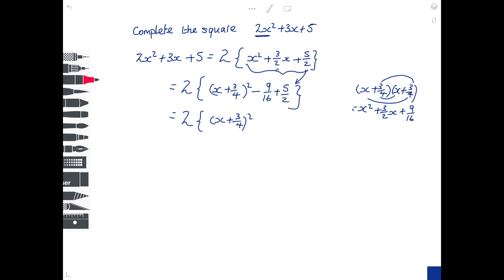And then minus 9 over 16 plus 5 over 2 is plus 31 over 16. Now if you want to see how I did that, it's minus 9 over 16 plus 5 over 2.